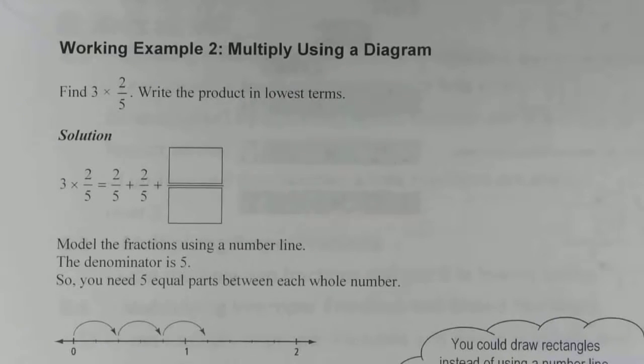Number two, multiply using a diagram. Find three times two-fifths, write the product in lowest terms.